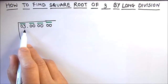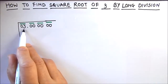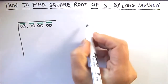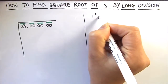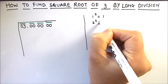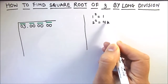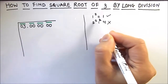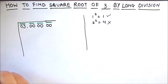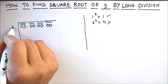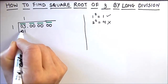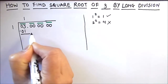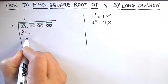The second step is to find a number whose square is equal to or just less than 3. We have 1 squared is 1 and 2 squared is 4. Since 2 squared is 4, we are not going to take 2; we are going to take 1 as our first divisor. So 1 times 1 equals 1, and we subtract: 3 minus 1 is 2.